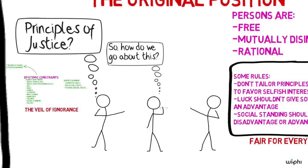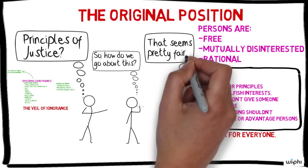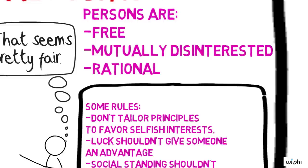Rawls believes that the principles of justice the agents construct in the original position under the veil of ignorance will be fair simply because the situation itself is set up fairly.